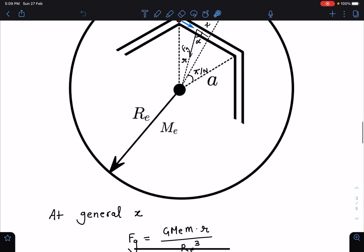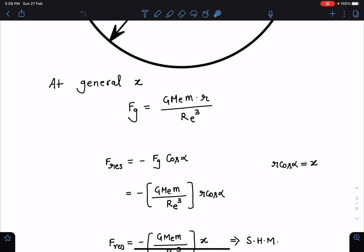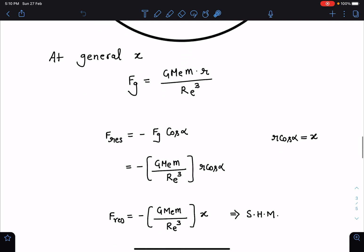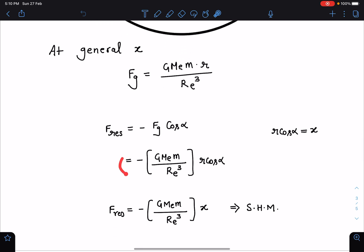We can check here this F_gravity is nothing but GMm·r/R_e³. We can use the solid sphere gravitational field formula and the component of it along the tunnel I can write as -F_g·cos(alpha), where this minus sign is due to restoring nature. When we substitute the values, we're getting -GMm/R_e³ and this is r·cos(alpha).